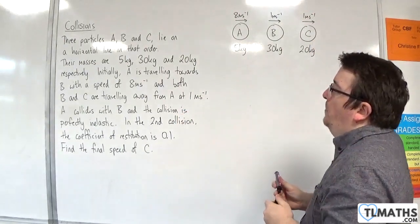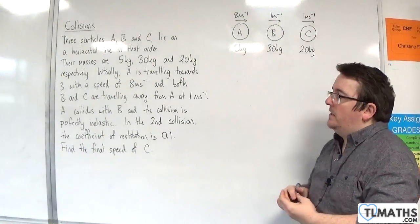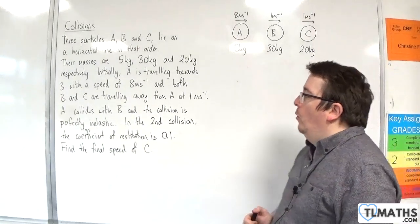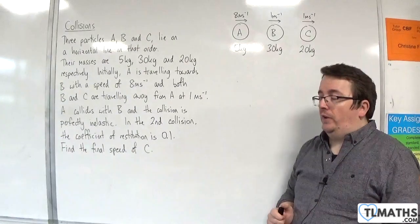A collides with B, and the collision is perfectly inelastic. In the second collision, the coefficient of restitution is 0.1. Find the final speed of C.